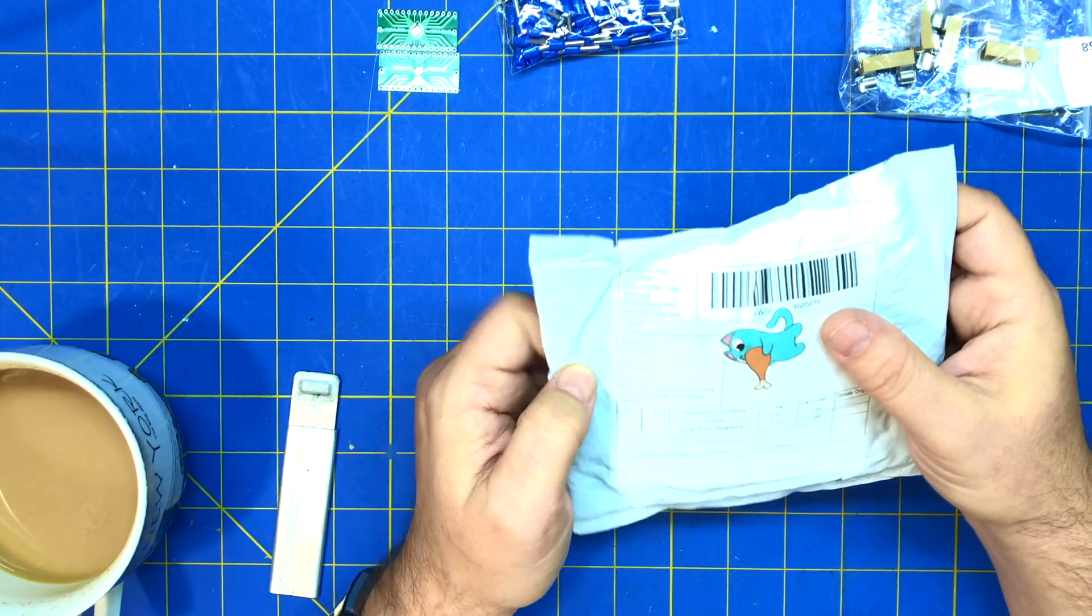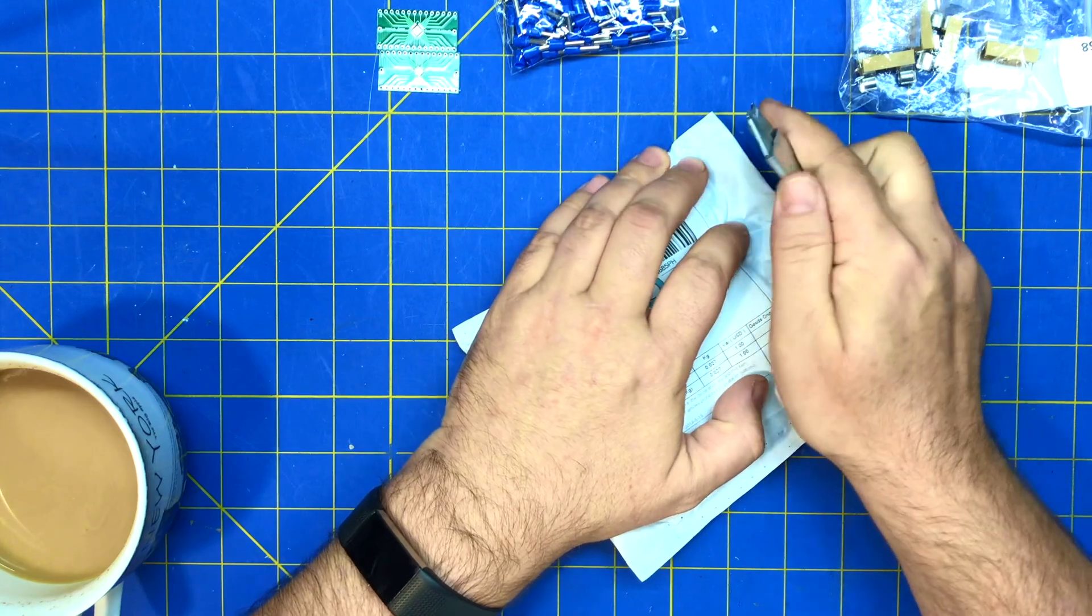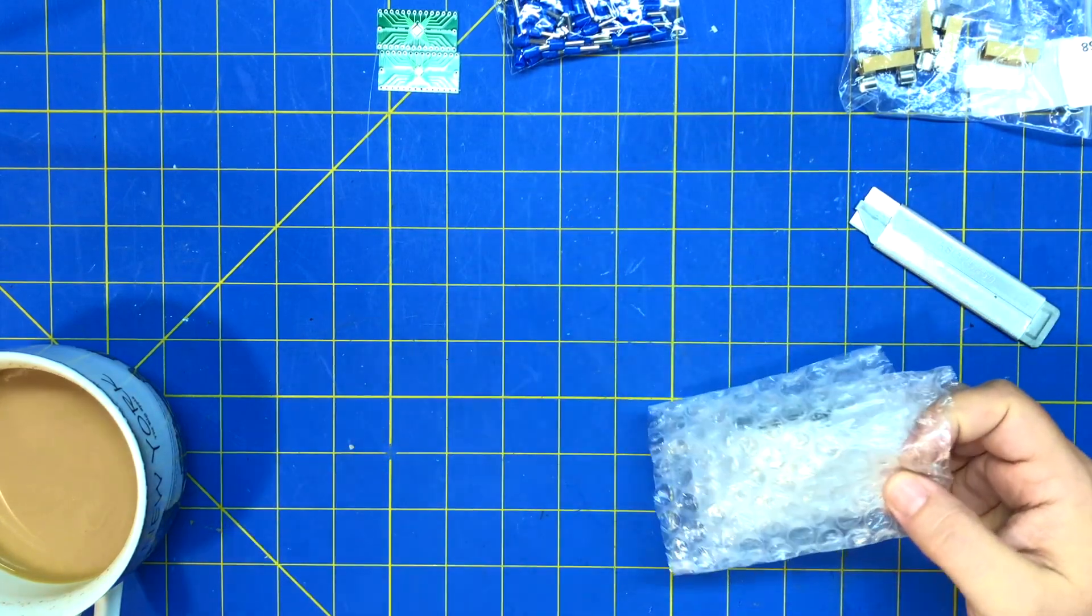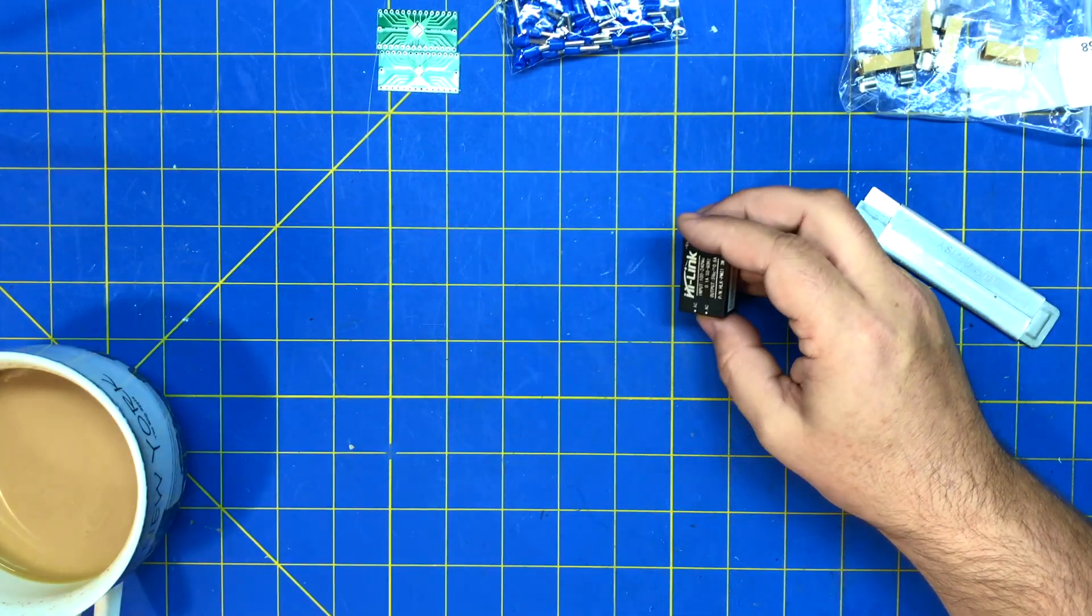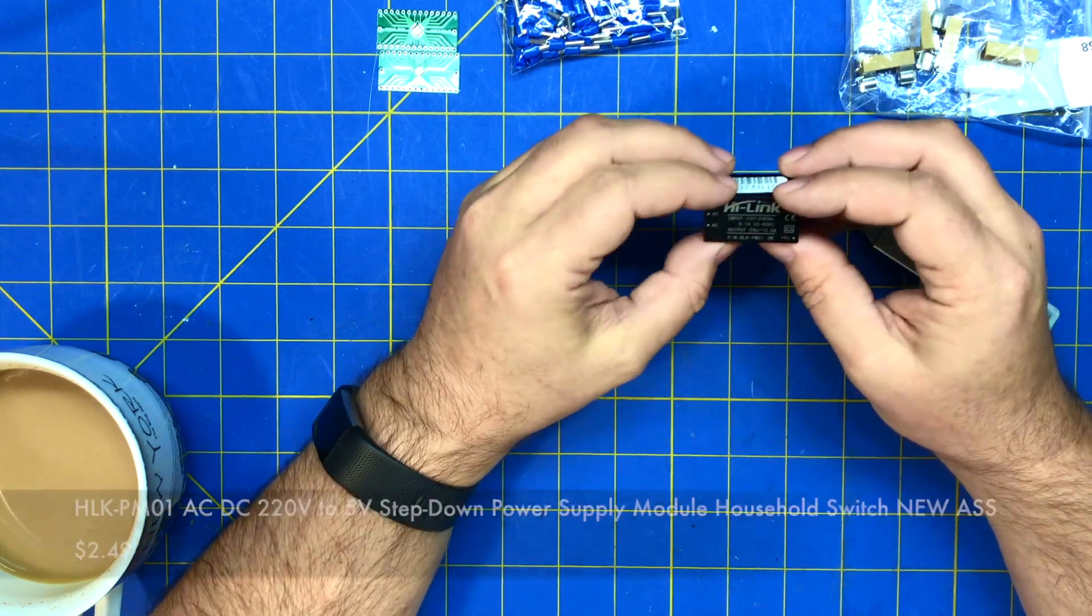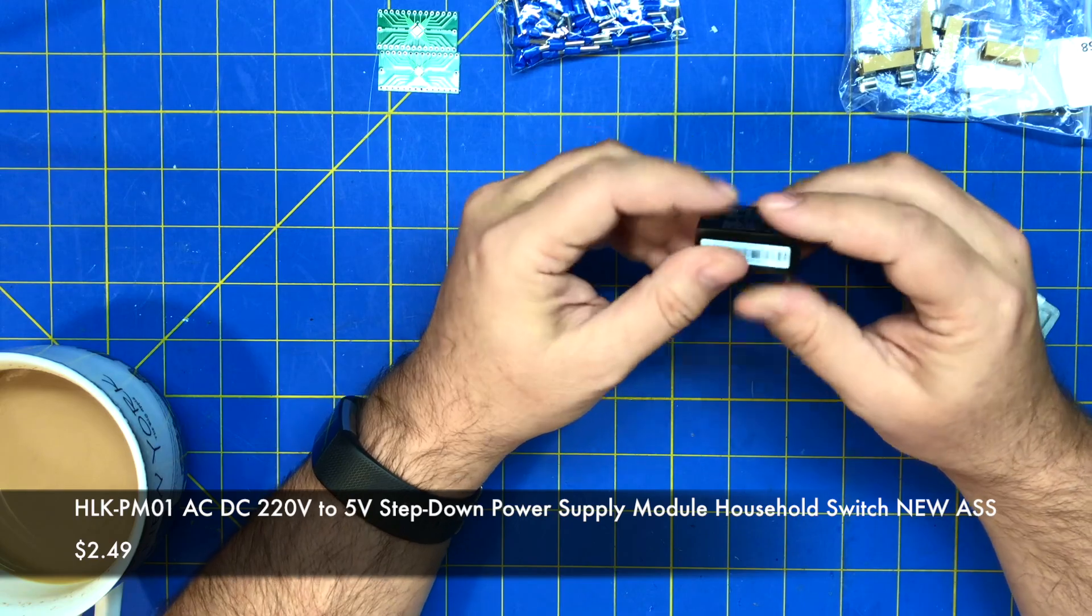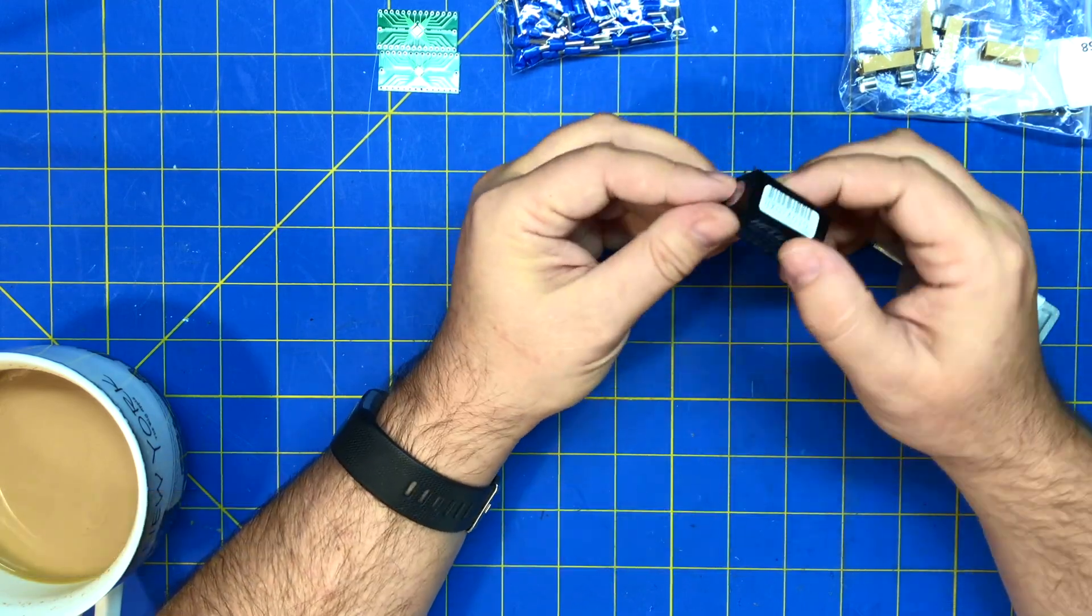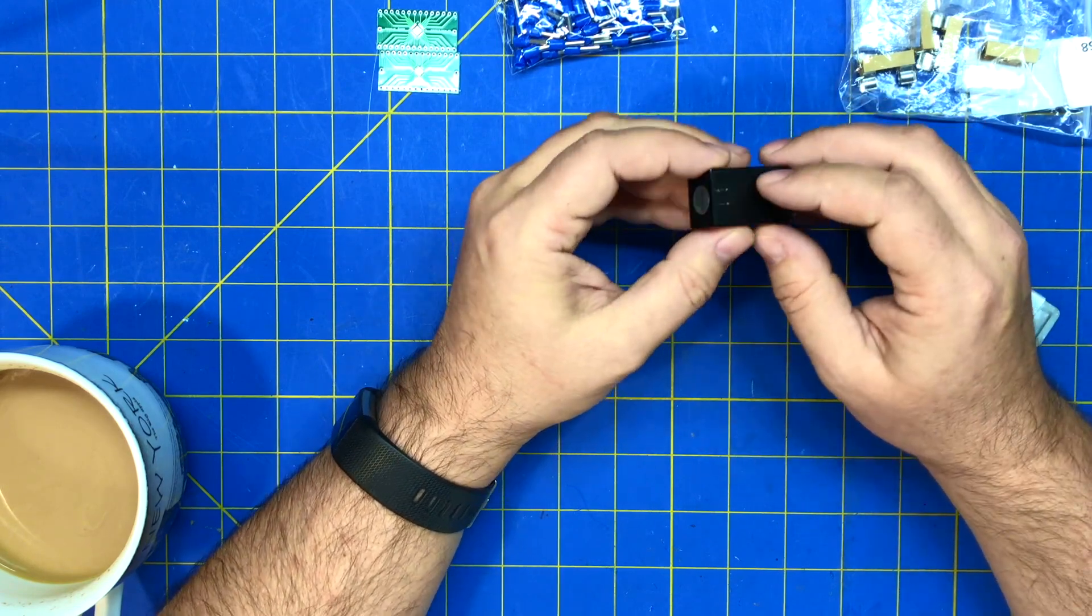All right, modules. Always like a module. Still have enough modules to prototype pretty much anything, ever. All right, this is, I already have one of these I think. I think I bought another one. This one is obviously not real. The other one I have is genuine. This looks fake.